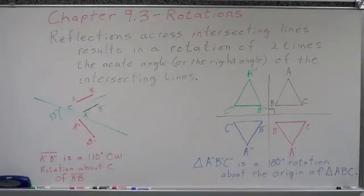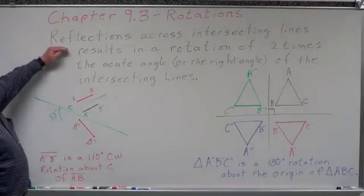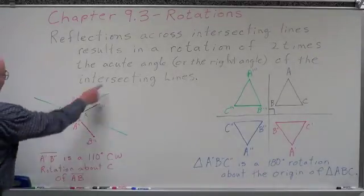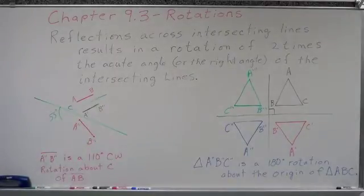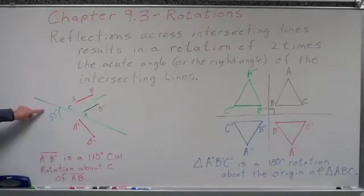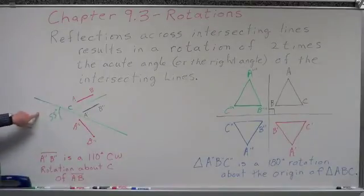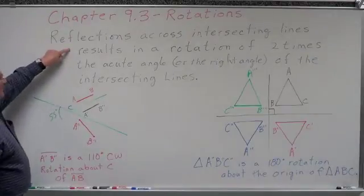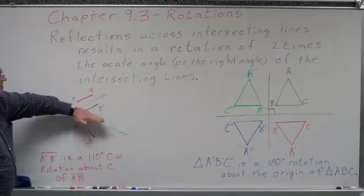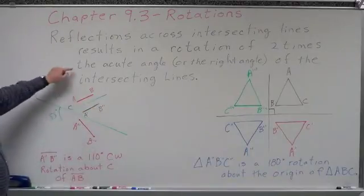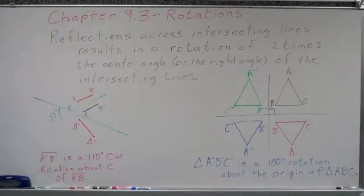Now read that, and if you're anything like me, you're going to read it and get just as confused as you did the first time — the more you read it, the more confused you get. So let's look at this. Reflection across intersecting lines: we have two intersecting lines. We measure the acute angle — in this case this angle is 55 degrees. That's the acute angle, not the obtuse angle. Two times the acute angle is 55 times two, which is 110.